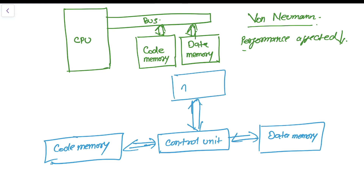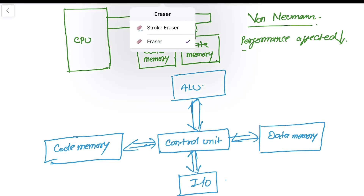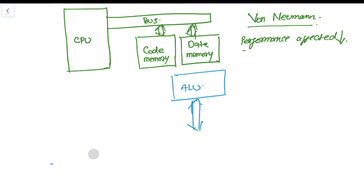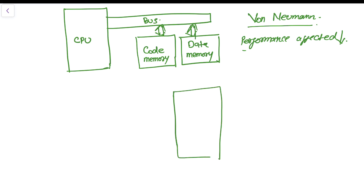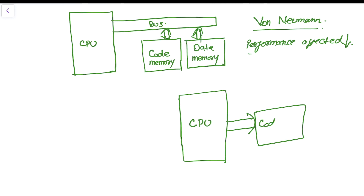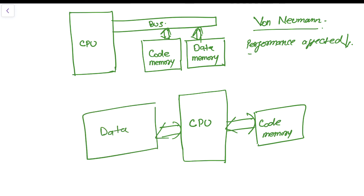The control unit is connected with the ALU and also connected with the input and output. Let me redraw this more clearly. Here you have a CPU, here you have a code memory, and then you have a data memory. So this is the difference between Von Neumann and Harvard architecture.